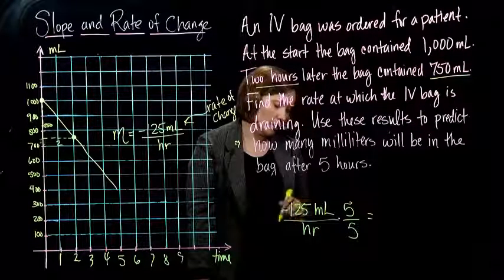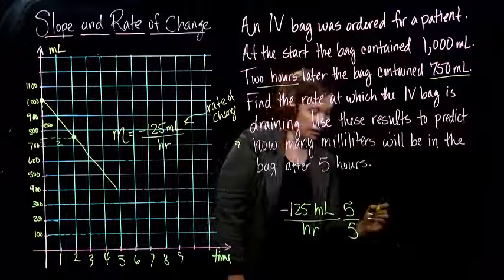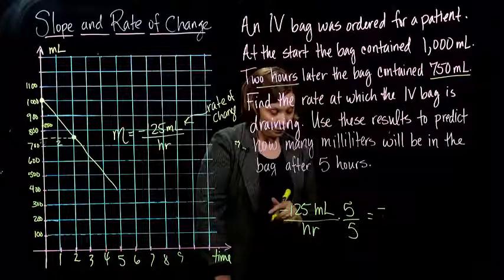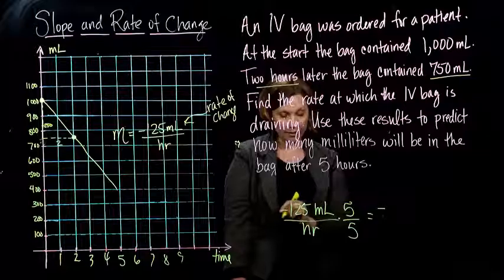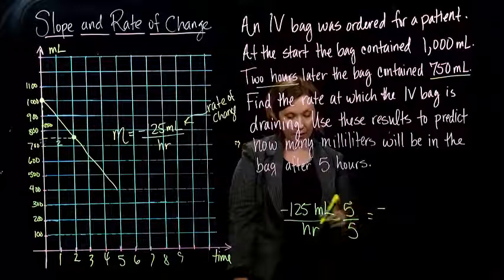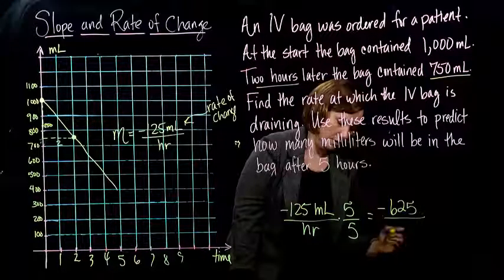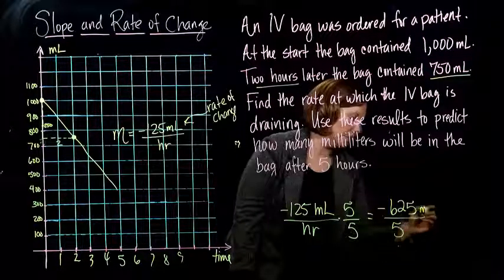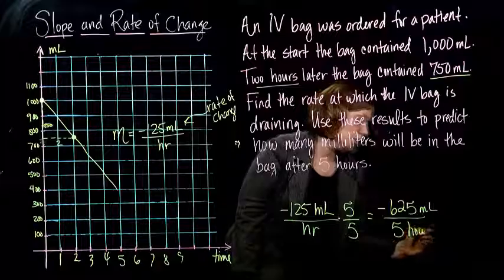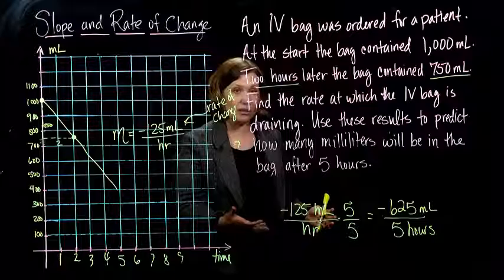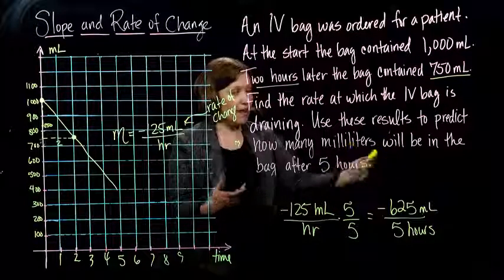So 125 times 5, so that'll be negative five times 100, so negative 500, 625 milliliters in five hours.